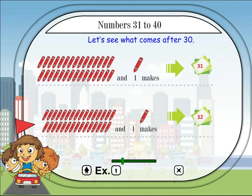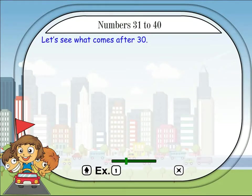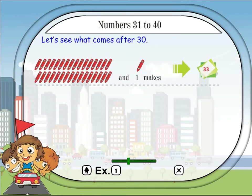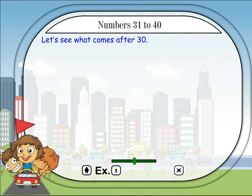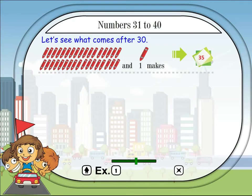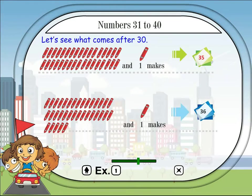Numbers 31 to 40. Let's see what comes after 30. 30 and 1 makes 31. 31 and 1 makes 32. 32 and 1 makes 33. 33 and 1 makes 34.